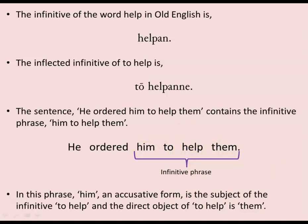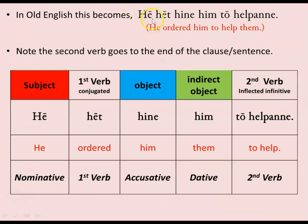In Old English this becomes 'hē hēt hine him helpanne' — he ordered him them to help. That sounds a bit strange to modern English ears, with 'him' and 'them' right next to each other. 'Hēt' is the second-person singular past tense form of 'ordered'. Notice that the second verb has gone to the very end of the clause, following the normal rules in Old English.